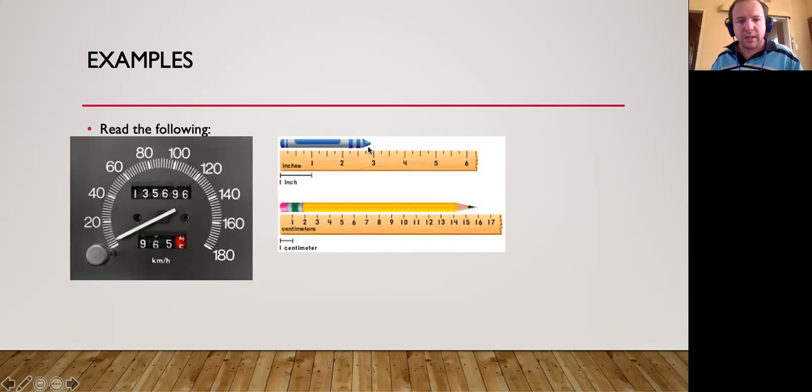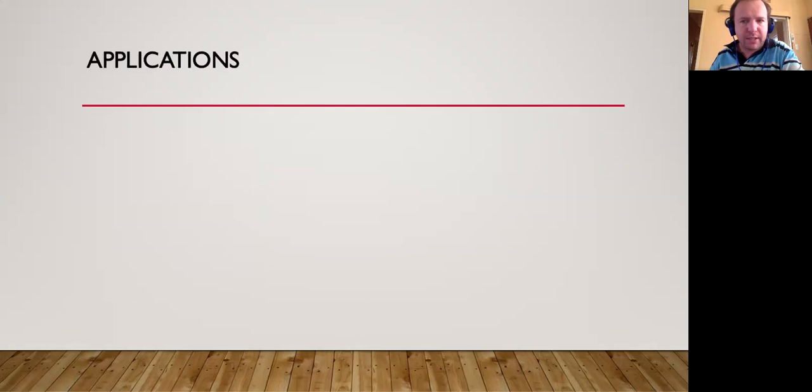Over here I'll ask you to read the measurement of the crayon and the pencil. Here the crayon would be about 3 inches and the pencil would be around 16 centimeters. It's simply because it ends at the 3 and 16 and also starts at the 0. Now what would happen if it was starting at 1 and ended at 3? Then the crayon would be only 2 inches. You would basically work out the difference between the two numbers.